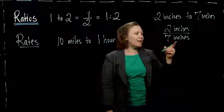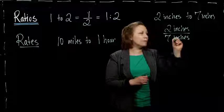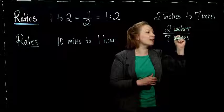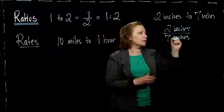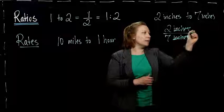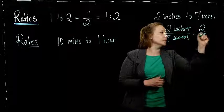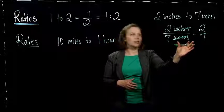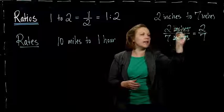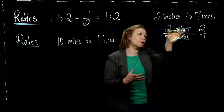You can think of inches like a variable. It's the same on the top and the bottom, so they cancel each other out, just like we would if it were an X or a Y. We would end up with just 2 over 7. Ratios are unitless because the units cancel each other out when we're measuring the same thing in the numerator and denominator.